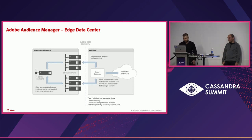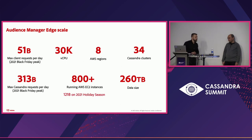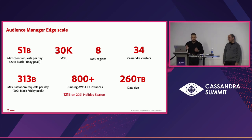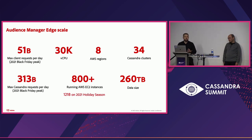For some numbers: we've got a peak number of daily client requests in Audience Manager of 51 billion. That translates to roughly 313 billion daily Cassandra requests. As already mentioned, we are deployed in eight AWS regions. We are running 34 Cassandra clusters on more than 800 instances, holding 260 terabytes of data.